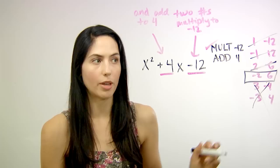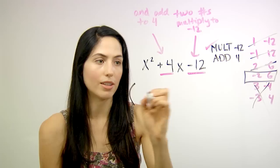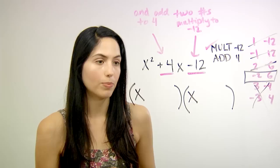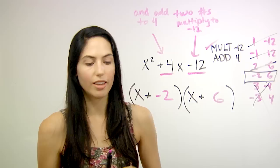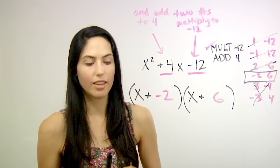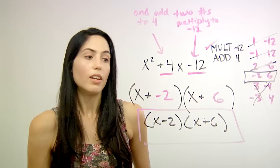All you need to do is rewrite your quadratic as two sets of parentheses multiplied together, each of them starting with x. And fill in those two numbers that you found, negative 2 and 6. You can put plus, plus. Fill in negative 2 and 6. Now of course you can simplify that and just write it as x minus 2 times x plus 6. So that's your answer for how to factor this quadratic.